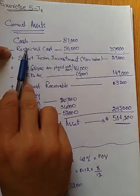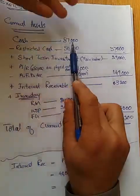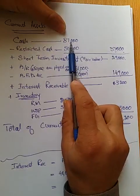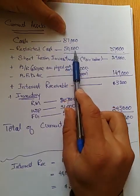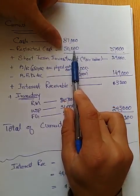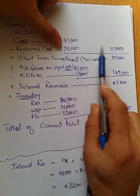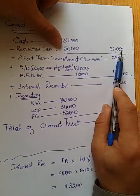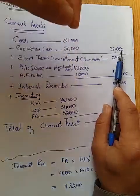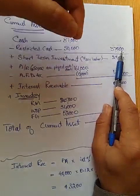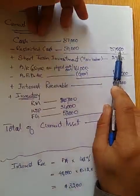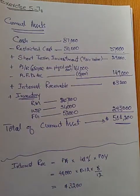That's it for exercise 5.7, where we were only supposed to calculate the current assets. The only tricky part to remember is the restricted cash — we had $87,000 total, but $50,000 is not immediately available due to plant expansion, so we only write $37,000 in the main column as the cash we can use to pay bills and expenses right away. Thank you very much ladies and gentlemen, stay safe.